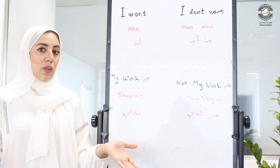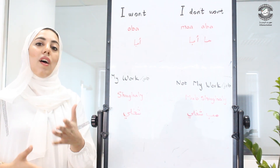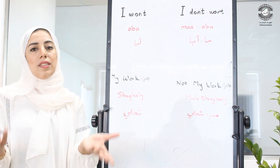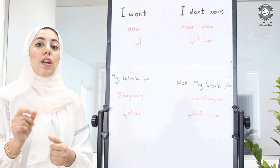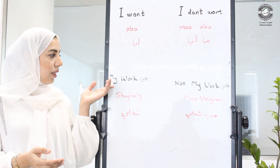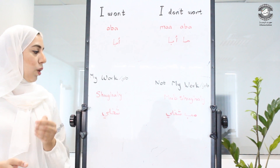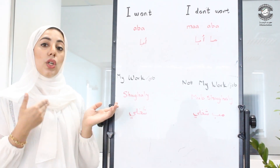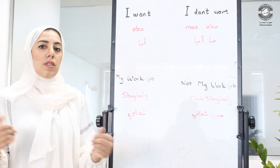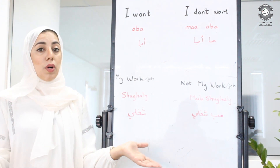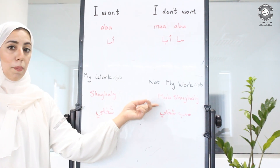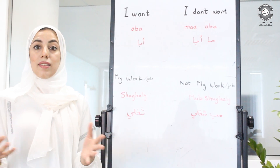If you have a noun and you want to change it to negative, it's simple — you just add the sound of 'mob' in front of it. For example, 'my work' or 'my job' in Emirati is 'shughli'. If you want to say 'not my job' or 'not my work', you say 'mob shughli'.